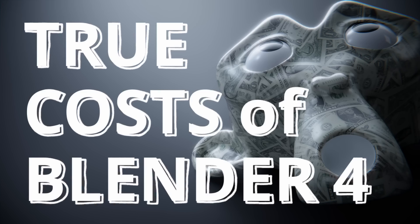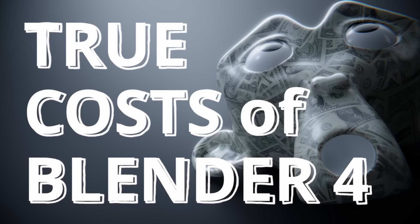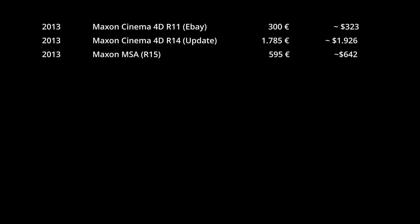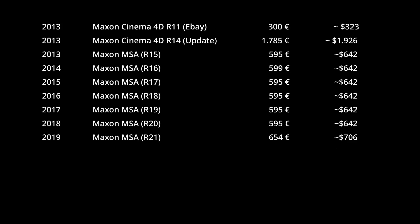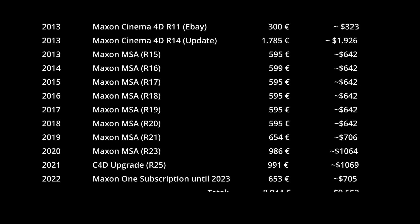Before discussing Blender's pricing, I'll show my Cinema 4D costs over the past 10 years and what it might cost in the future using the same plugins. In 2013, I acquired Cinema 4D Release 11 on eBay for about $320 and later upgraded to version 14 for $1,900. I entered into an MSA contract for $640 and paid the same annually for updates over 6 years. Subsequently, I invested in upgrades to Release 23 and 25 for approximately $1,000 each and accepted a Maxon One subscription offer for $700. In total, my expenditure on Cinema 4D over 10 years was around $9,600.